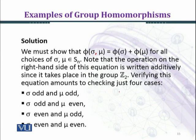sigma odd mu even, sigma even and mu odd, and both sigma and mu are even. In these cases we have to prove that phi is a homomorphism.